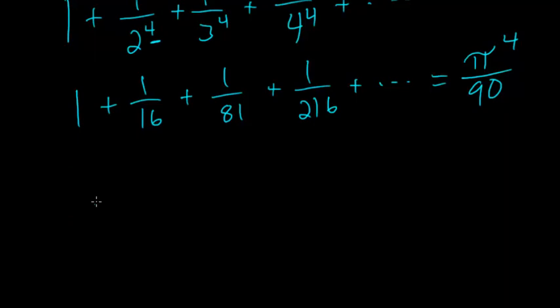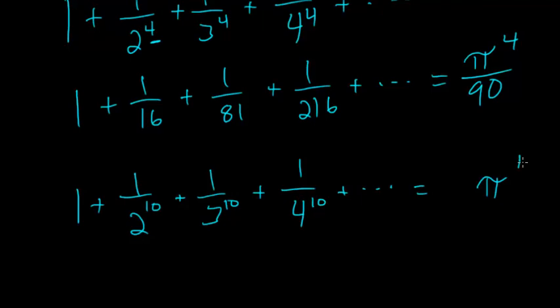And he eventually finds that, in general, you can solve it for any even power. So like 1 plus 1 over 2 to the tenth, plus 1 over 3 to the tenth, plus 1 over 4 to the tenth, and so on. You'll get something that's equal to pi to that power, that even power, pi to the tenth, multiplied by some constant, or some crazy fraction, probably.